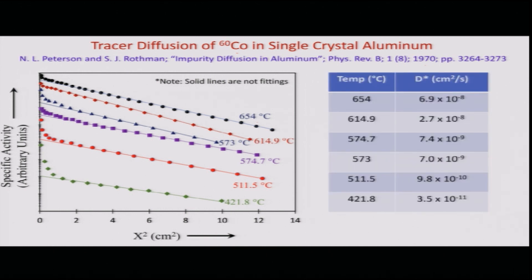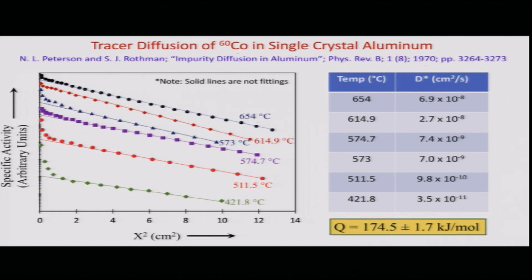They conducted experiments at various temperatures including 650°C, 614.9°C, 573°C, and down to 421.8°C. The diffusivities determined at these temperatures are presented in a table. Over this temperature range of approximately 421°C to 654°C, the impurity diffusion of cobalt varies over three orders of magnitude. They also evaluated the activation energy for impurity diffusion of cobalt in aluminum, which comes out to be about 174.5 kJ/mol.